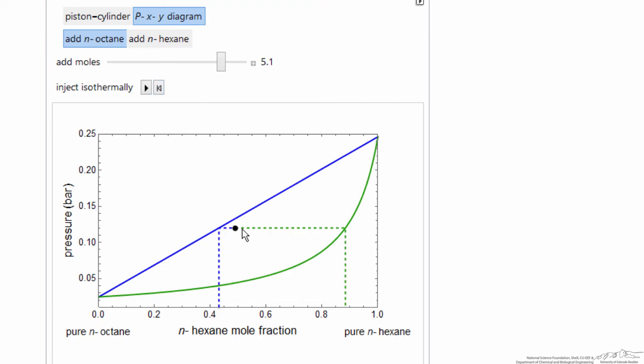We started in vapor-liquid equilibrium, but very heavily towards the liquid side. The blue line corresponds to the boundary between the liquid phase and vapor-liquid equilibrium. So when I inject this much octane, I move—because octane has a lower saturation pressure—I move to all liquid.